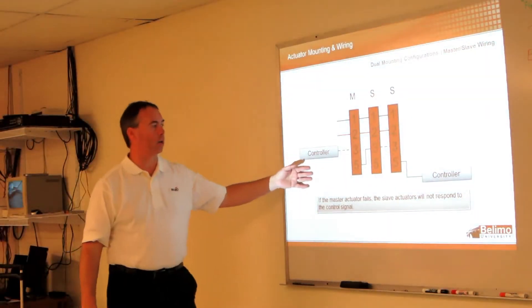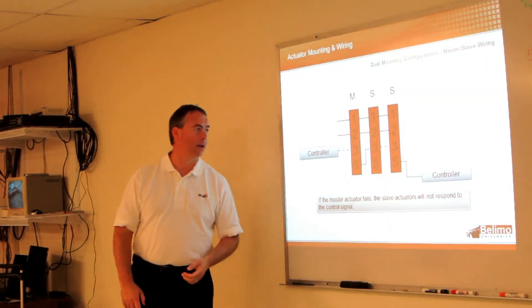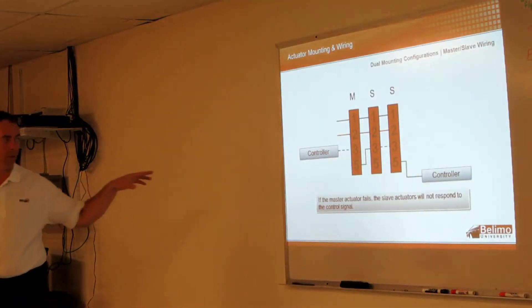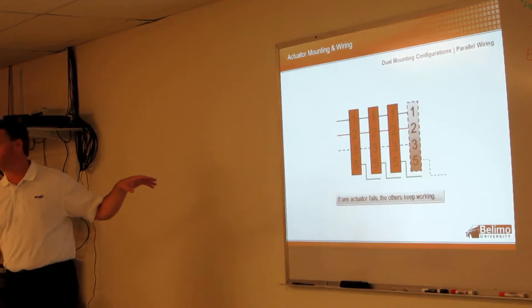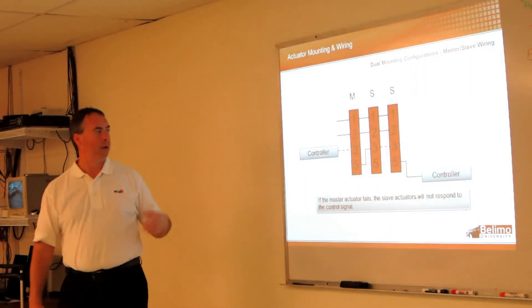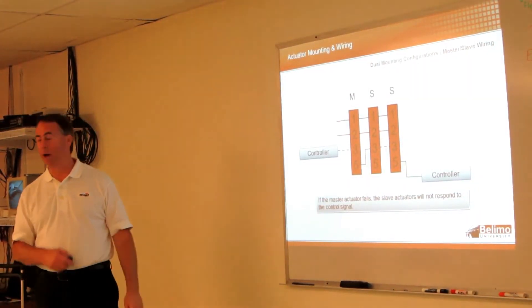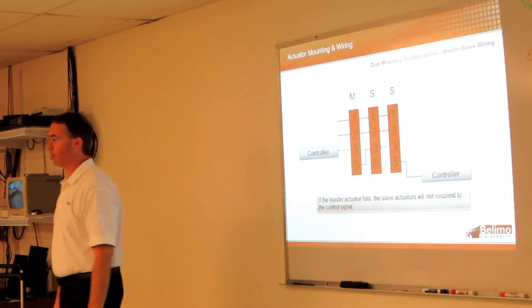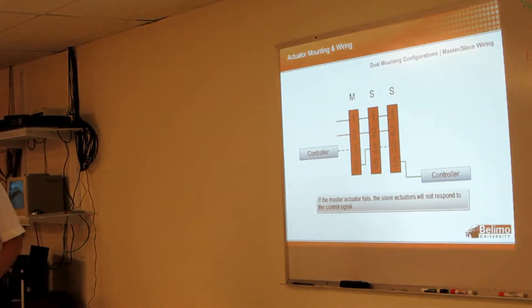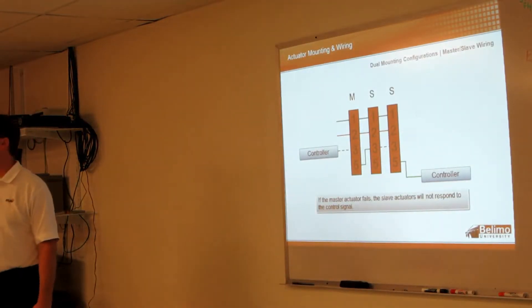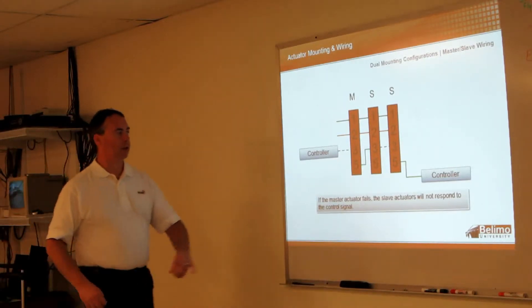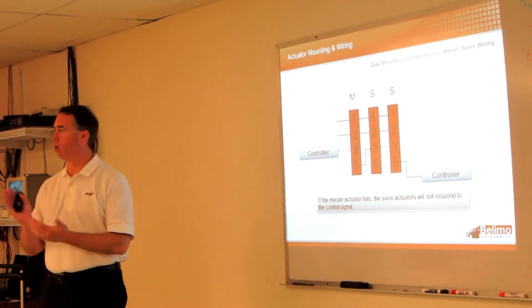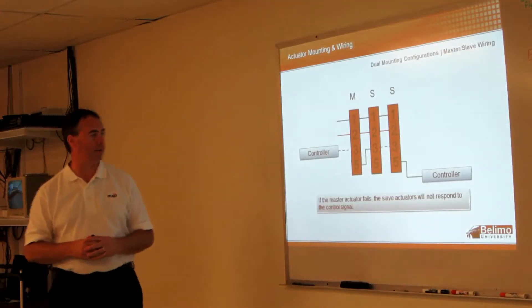Now, this is master-slave wiring, and actually this is the preferred method, if they are both on the same shaft. That other was if they were on multiple shafts. This, if you're on the same shaft, you want to do the master-slave wiring, where you do want to control the other actuators from that feedback, and the reason being you want to keep them in sync. So by taking this feedback wire to this actuator, then it's going to control at the same rate as the first actuator.